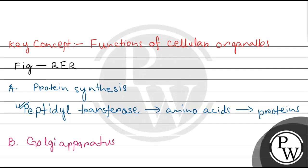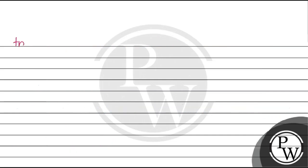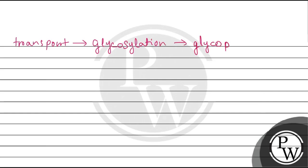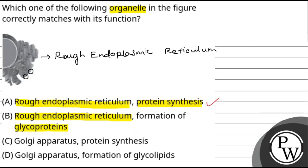After RER, after protein synthesis, proteins are transported to the Golgi apparatus where glycoproteins are made. This is why option B is incorrect.